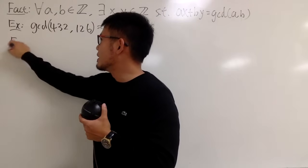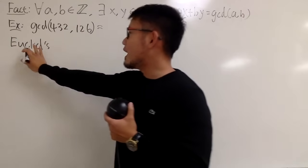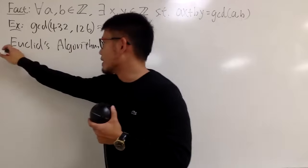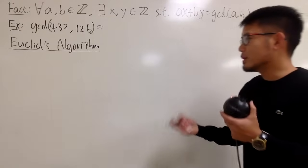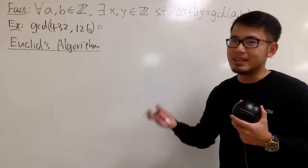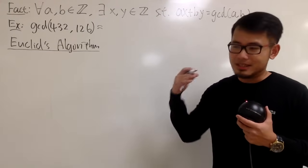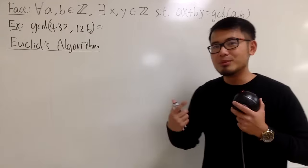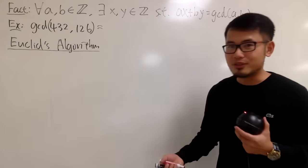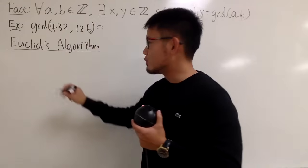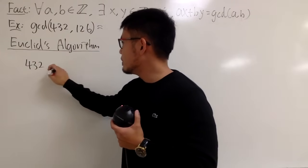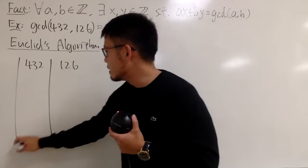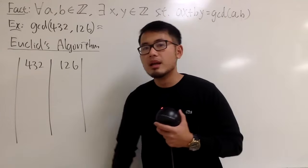This is called the Euclidean algorithm — not Euler, Euclid. It uses what we call long division, or technically the division algorithm. The textbook way is kind of hard to follow, so let me show you how I work out the computation. I put down these two numbers — 432 and 126 — with a line between them, like a wall.